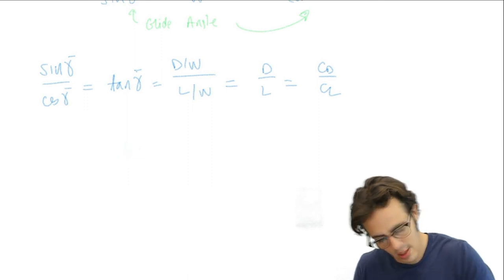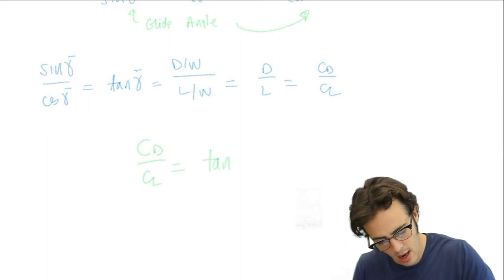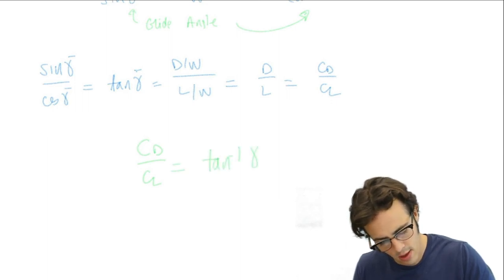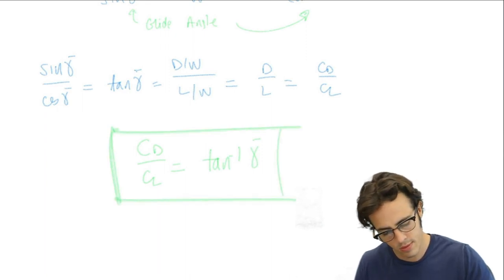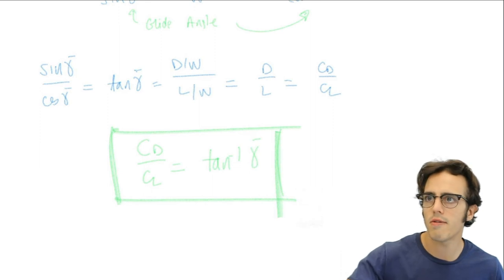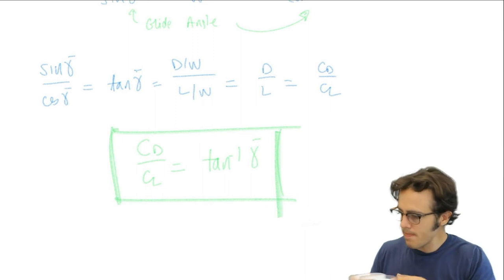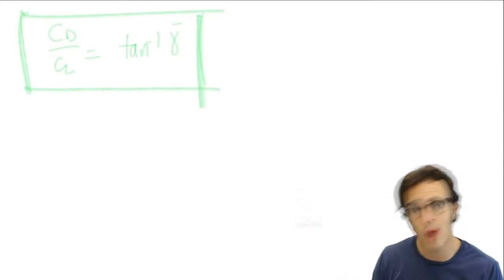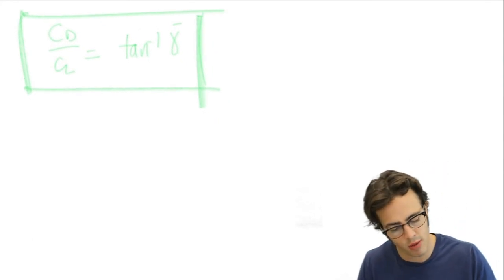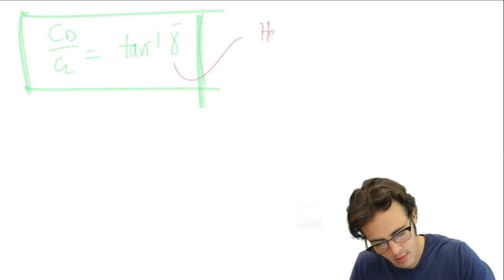Dividing sine gamma bar by cosine gamma bar gives tangent gamma bar, which equals drag over lift, which equals CD over CL. Writing it the other way: CD over CL equals the arc tangent of gamma bar. Now let's think about the significance of this expression: the glide angle is not a function of the aircraft weight — it's purely a function of the aerodynamic properties of the airframe.